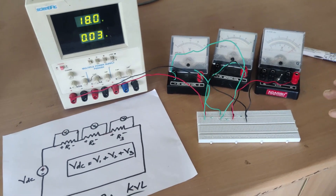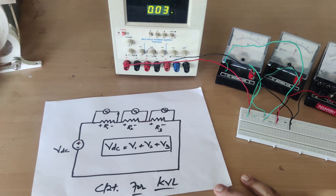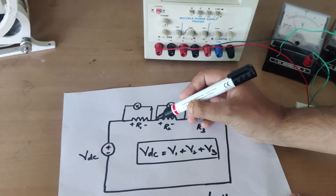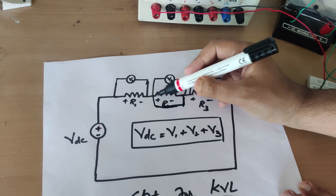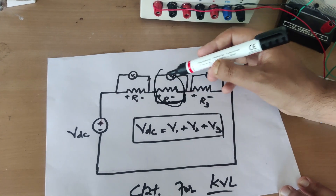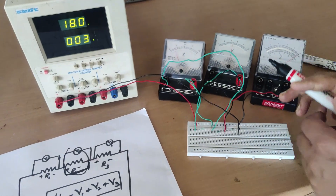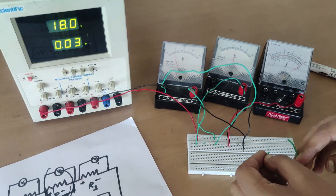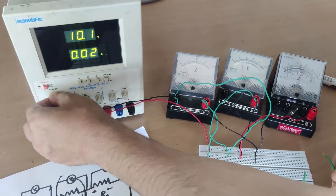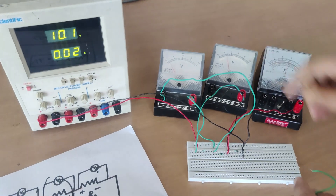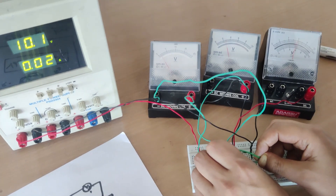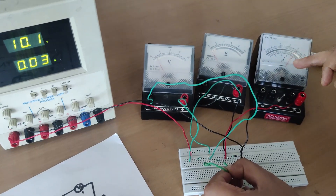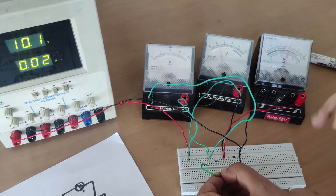Now, if we short any resistor, the voltage drop across that resistor should be zero. For example, if I short R2 with a conductor, the drop across V2 should become zero and the entire remaining drop should appear across V1 and V3. Let me set the supply to 10 volts and short R2 with a wire. As you can see, the voltage across V2 has gone to zero and the entire drop is now distributed across R1 and R3, confirming the theory. I remove the short and the drops return across all three resistors. Thank you very much.